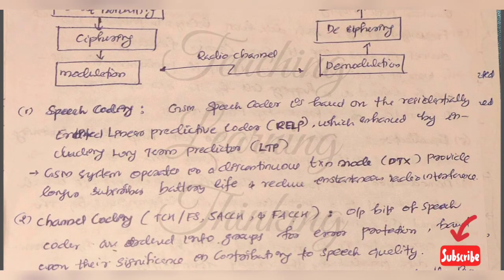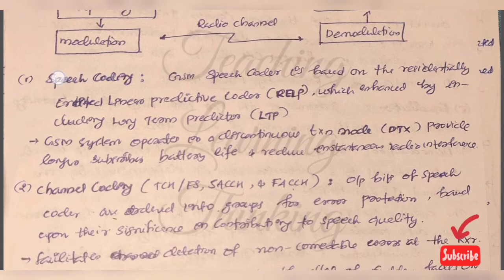First one is GSM speech coder. This is based on the residually excited linear predictive coder RELP, which is enhanced by including long-term predictor. GSM system operates in discontinuous transmission mode to provide longer subscriber battery life and reduce instantaneous radio interference.